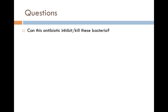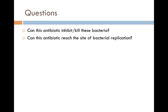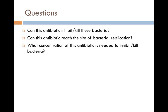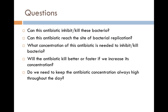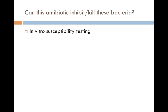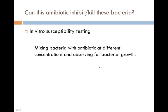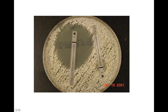So what are the questions we need to ask when we're picking an antibiotic? Can this antibiotic inhibit or kill these bacteria? Can that antibiotic reach the site it needs to in order to inhibit those sites? What concentration is needed to inhibit or kill the bacteria? Will the antibiotic kill better or faster if we increase its concentration? And do we need to keep that antibiotic concentration always high, or can it decrease? In vitro susceptibility testing helps us — we can mix bacteria with different antibiotics at different concentrations and see what happens to bacterial growth.